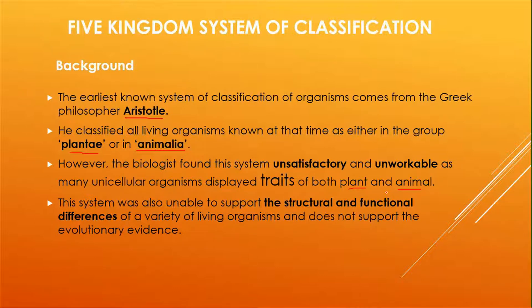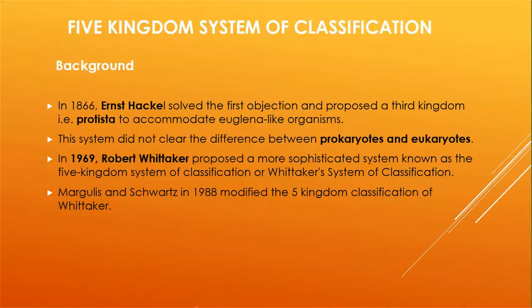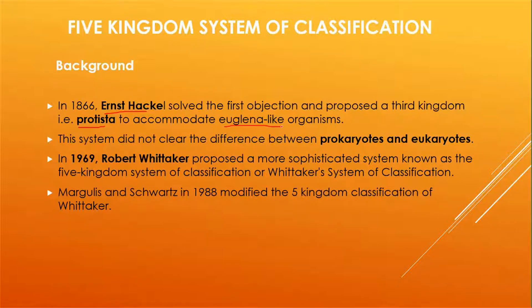This system was also unable to show the structural and functional differences. So in 1866, Ernst Haeckel introduced a third kingdom known as Protista. The purpose of this kingdom was to accommodate euglena-like organisms, which are in between plant and animal. But this system did not clarify the difference between prokaryotes and euglena.